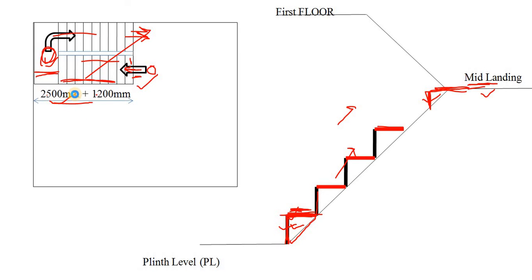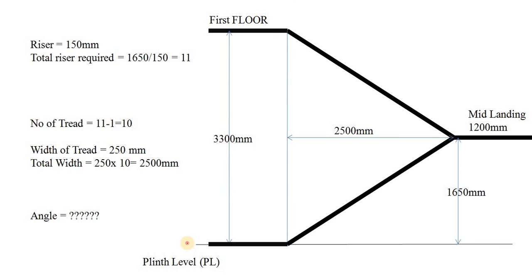Now let's see how this 2.5 meter length is derived. This is your plinth level or ground floor starting point. You start your stair from here, go up, and reach your mid landing. The length of the mid landing is 1.2 meters — this is normal practice. The length from the start to the mid landing is 2.5 meters. The question is: where does this 2.5 meter figure come from?